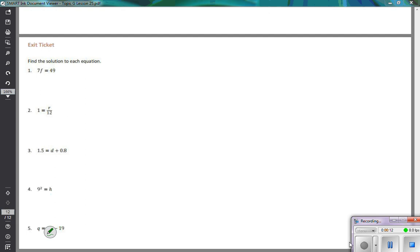I can see I'm looking at the value of f. It's 7 times the value of f equals 49. So the only thing that's going to make that equation true is if f is equal to 7. So that we have 7 times 7 equals 49.